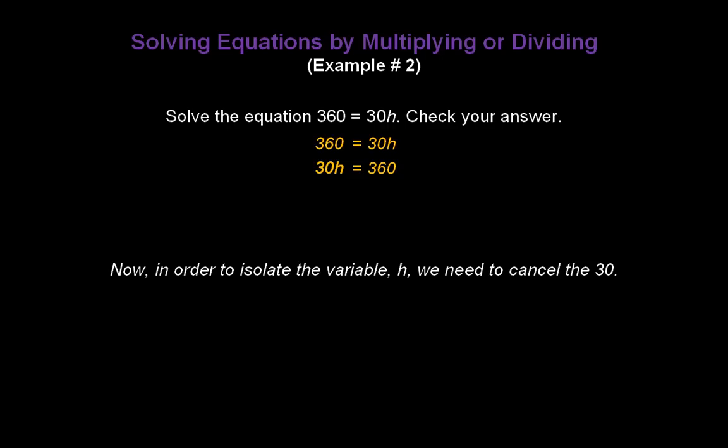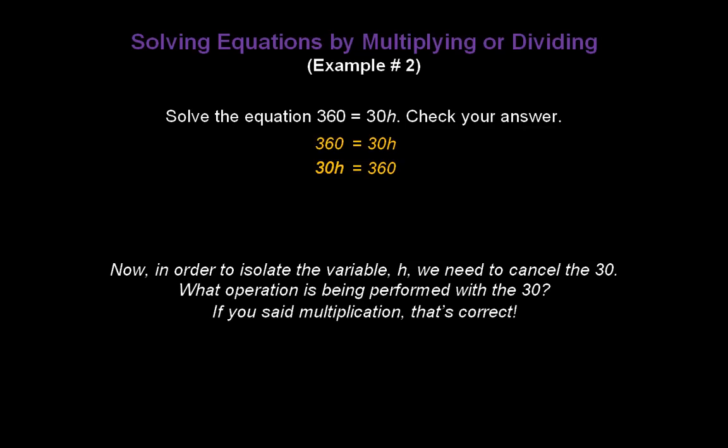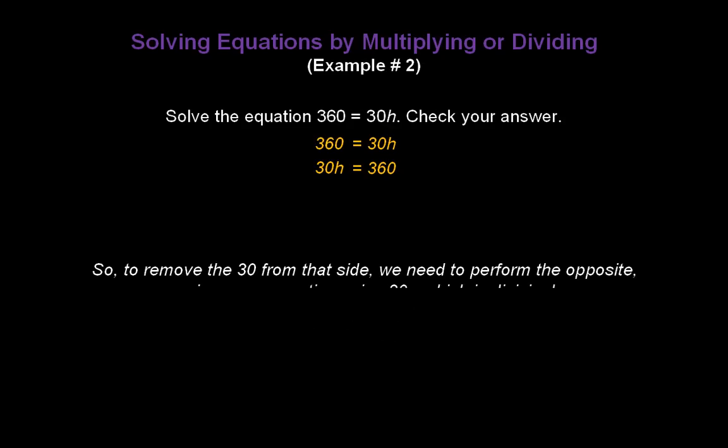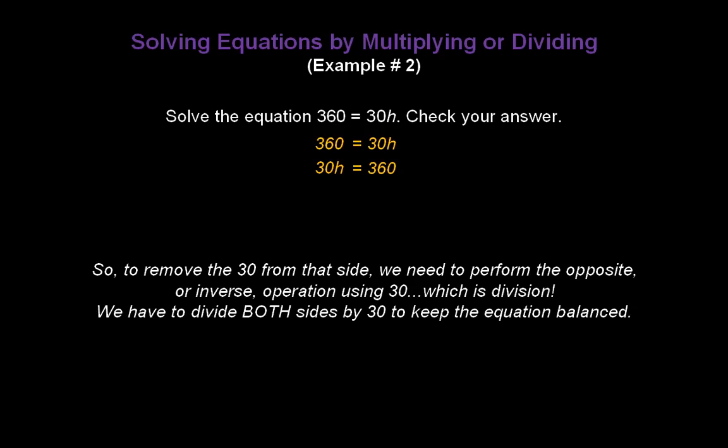Now, in order to isolate our variable h, we need to cancel out the 30. What operation is being performed with 30? If you said multiplication, that's correct. We have 30 times h on that side. That's the way it reads. So to remove the 30 from that side, we need to perform the opposite or inverse operation using 30, which is division. Very good. We have to divide both sides by 30 to keep the equation balanced. So let me divide both sides by 30. There's the left side and the right side divided by 30.